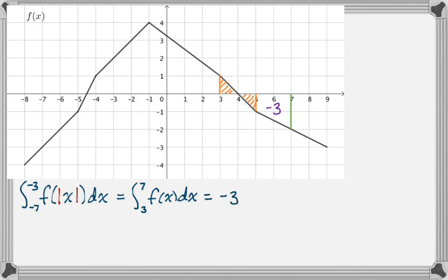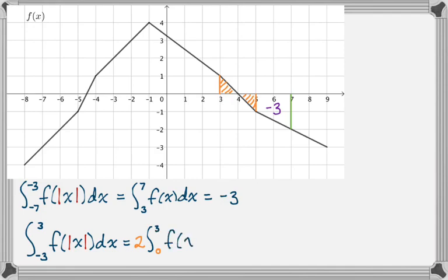One more: if we want the integral from negative 3 to 3 of f of the absolute value of x dx — this might be the most common type with symmetric bounds. It's an even function, so we can say it's twice the integral from 0 to 3 of f of x dx. This has a very awkward y-intercept, so I used a calculator to evaluate it. The calculator gave 51 over 4. So those are three different ways that absolute values will show up in definite integrals. I hope you found this helpful and good luck.